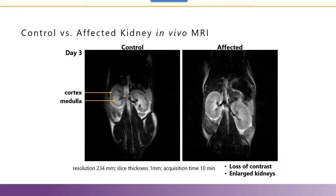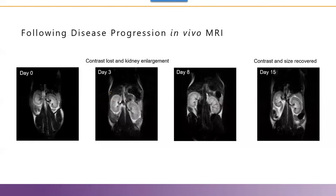Enlargement of the kidneys was also observed. In vivo MR on days 0, 3, 8, and 15 enabled identification of time-related changes in the kidney, indicating the day of maximal damage and necrosis on day 3, partial regeneration on day 8, and complete regeneration on day 15.